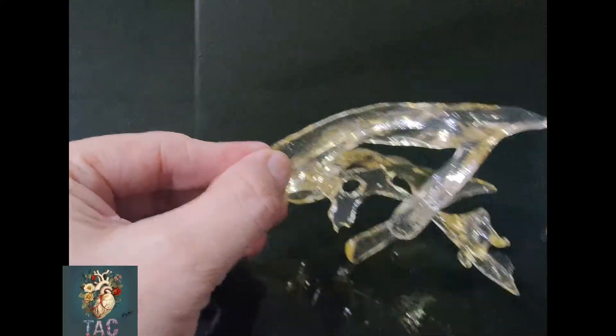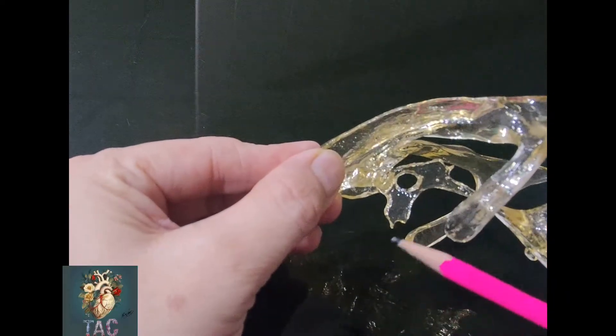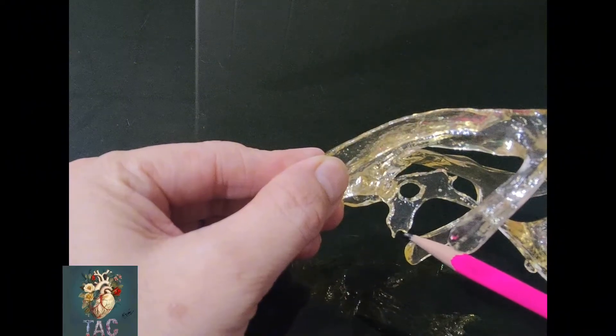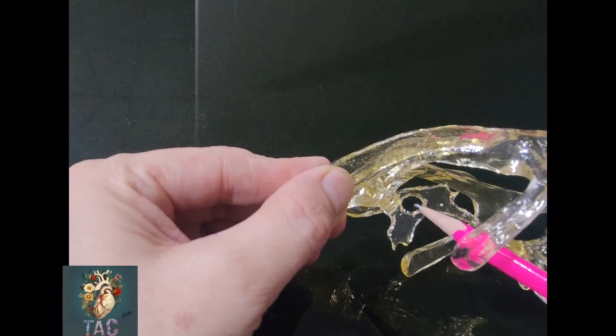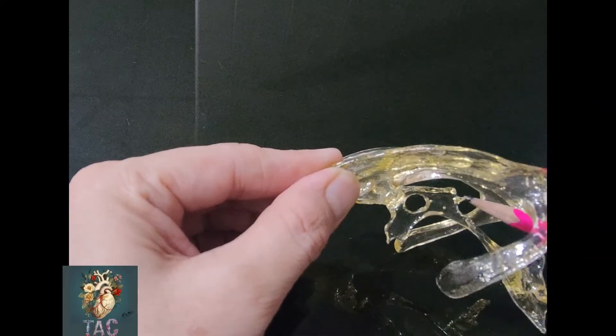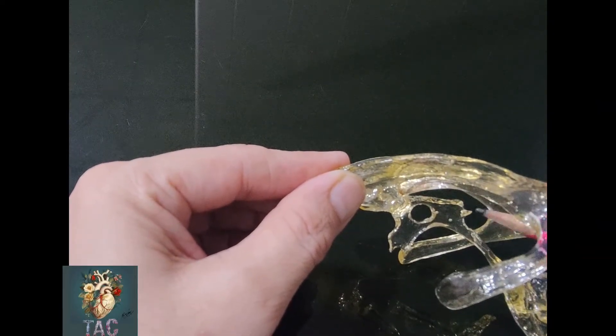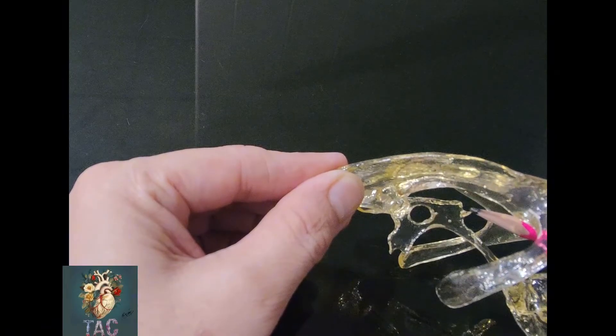in this area you can see the suprapineal recess of the third ventricle. This is the pineal recess of the third ventricle. This area shows the interthalamic adhesion. Here you can see the supraoptic recess and the infundibular recess of the third ventricle.